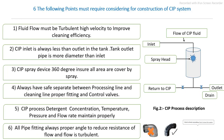The main points to consider for a typical CIP system in food processing are: whatever detergents or water flow into the processing line must be at high velocity — that means turbulent flow — which improves cleaning efficiency. The CIP inlet must always be less than the outlet in the tank, meaning the drainage system must have very high capacity compared to the inlet. The CIP spray system must completely cover all inside areas of the processing vessel.